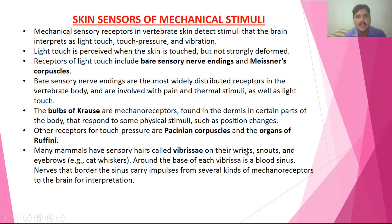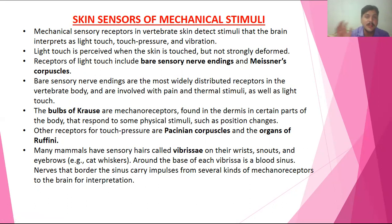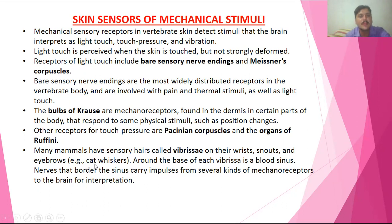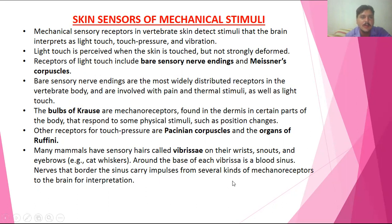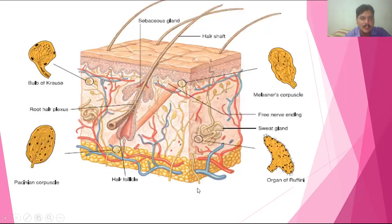Some mechanoreceptors are especially present in the wrist or snout — small hair-like structures. These are especially present in carnivores like cats and dogs, in the sinus of their snout. For example, cat whiskers: at the base of the whisker there are blood sinuses and nerve endings that carry impulses to receptors in the brain.